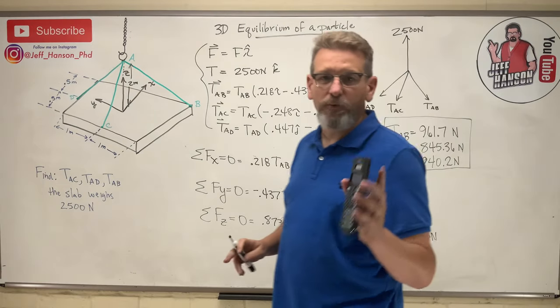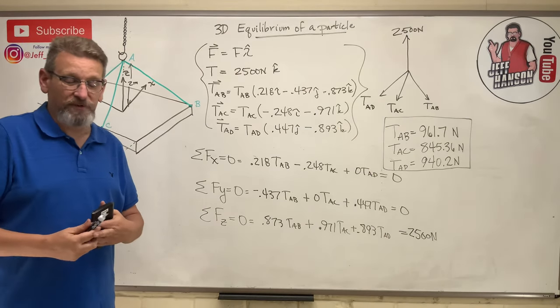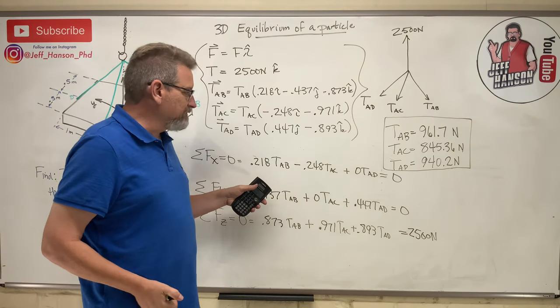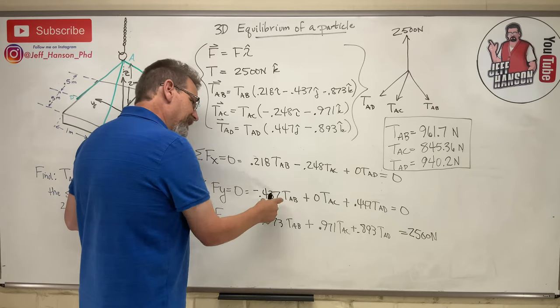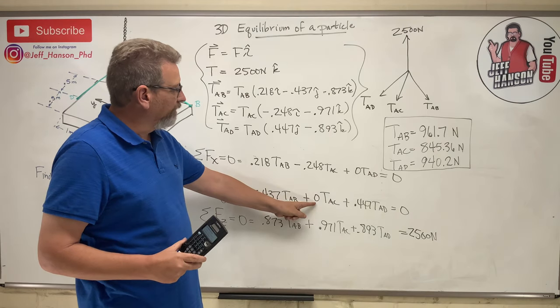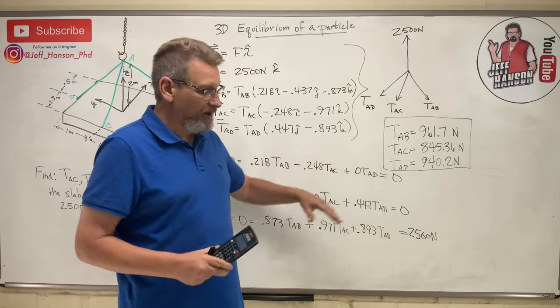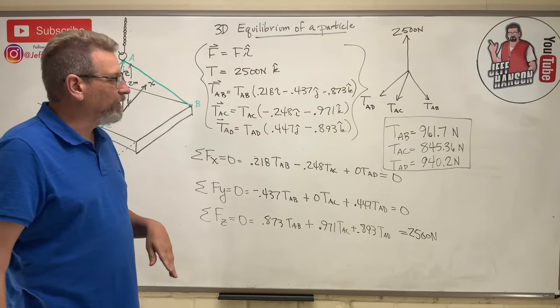That system solver is superty-duperty handy because it just prevents you from making an algebra mistake. Because to do this, I would have had to do a bunch of substitutions and moving stuff around and solve that equation and plug it into that equation. However, look at that. I put zeros in there for things that didn't exist, and I just left it in a nice matrix there. System solver, boom, does the algebra for you. No way you're going to mess it up.